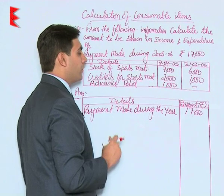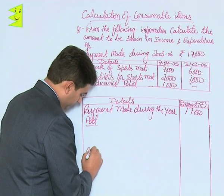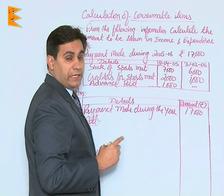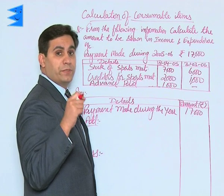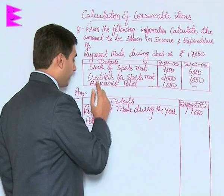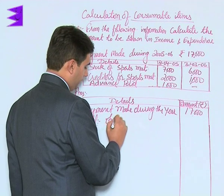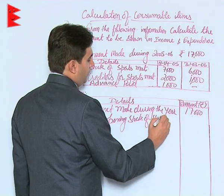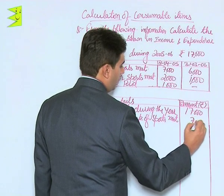We have stock of sports material at the beginning of the year, which is 7,000. By the matching principle, since this amount was the leftover from the previous year, it would obviously be used during the current year. Since it is used during the current year, it should be taken as an expense of the current year only. So we add opening stock of sports material: 7,000.